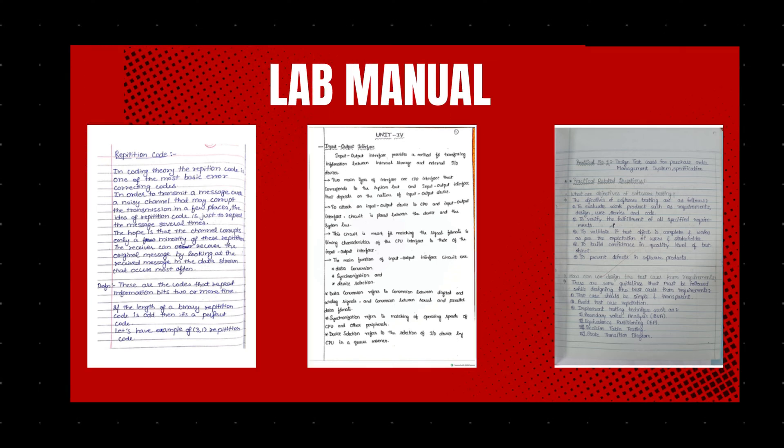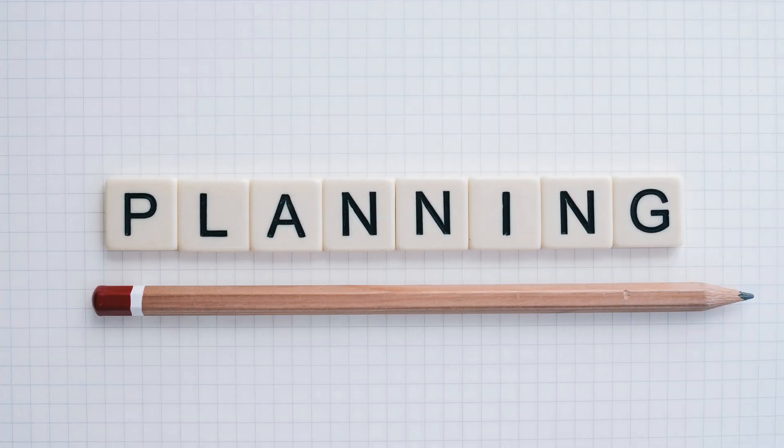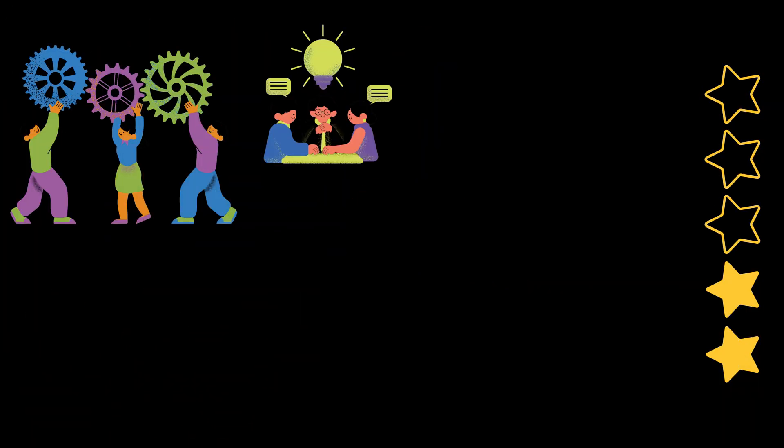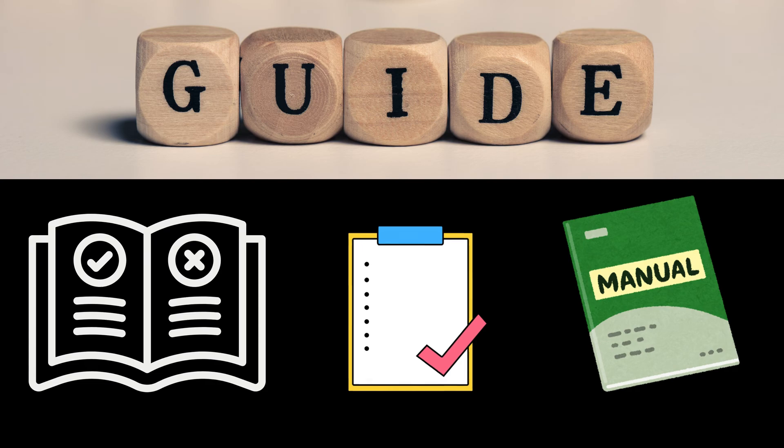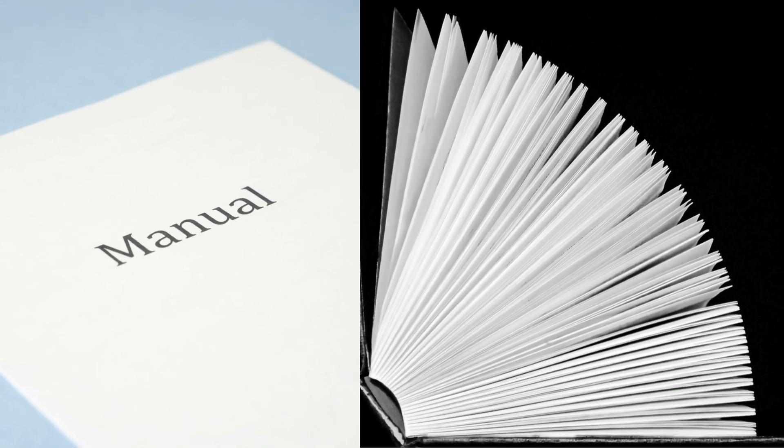Creating a lab manual for students from class 6 to 12 involves careful planning to align with the curriculum, the students' understanding levels, and the requirements of practical learning. Here is a structured guide on how to make a comprehensive lab manual for these classes.